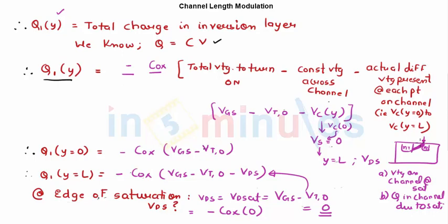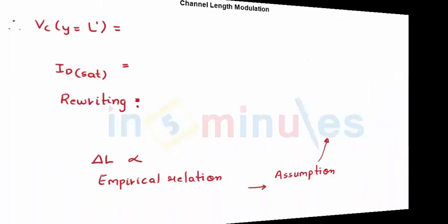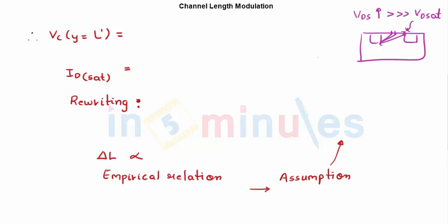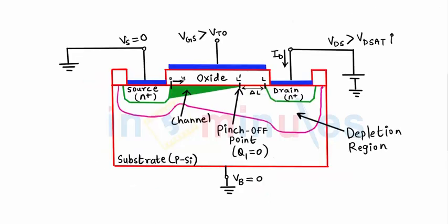Now if we keep on increasing VDS beyond VDSat, the channel will keep on shifting towards the left — the pinch-off point keeps shifting left. The voltage of the channel when pinch-off took place is not going to change. The channel has moved to a new point, now called L', and the original channel length was L. There is a difference of ΔL between L and L'. When pinch-off took place, the voltage at that point was VDSat.